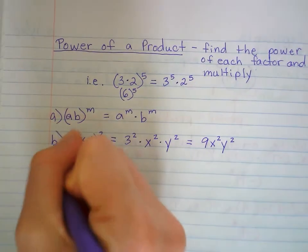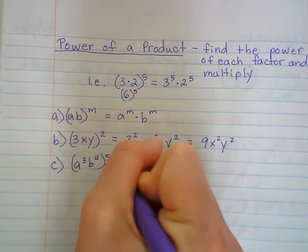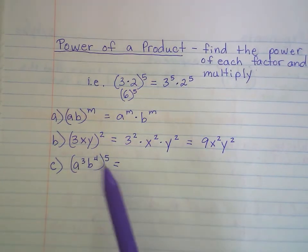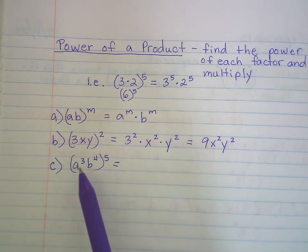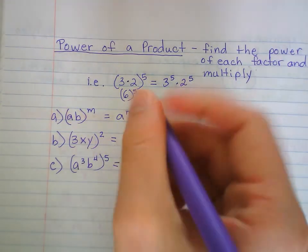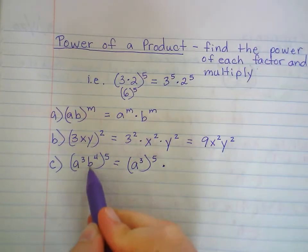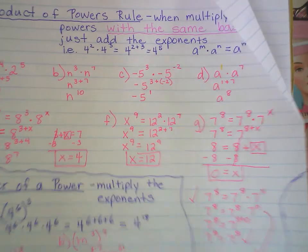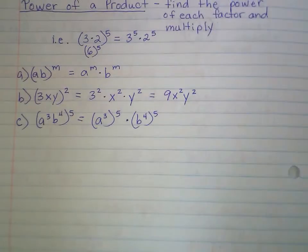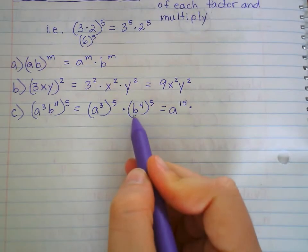And one more: a to the 3rd times b to the 4th all to the 5th. When it's outside, you have two things being multiplied and then raised to a power. This is the same as a to the 3rd to the 5th power, times b to the 4th to the 5th power. Then we just use the power of a power rule — multiply the exponents. So this is a to the 3 times 5 which is 15, times b to the 4 times 5 which is 20.